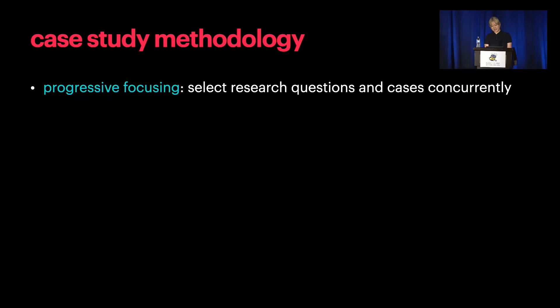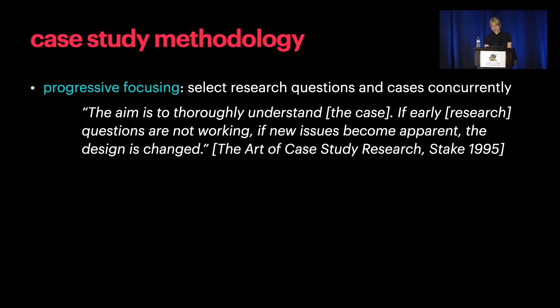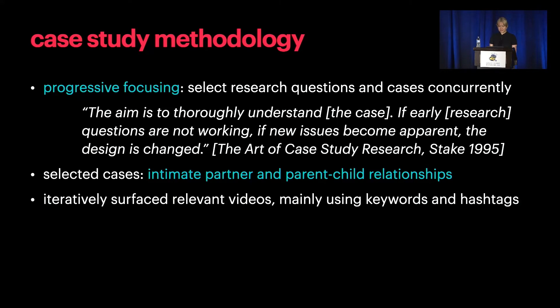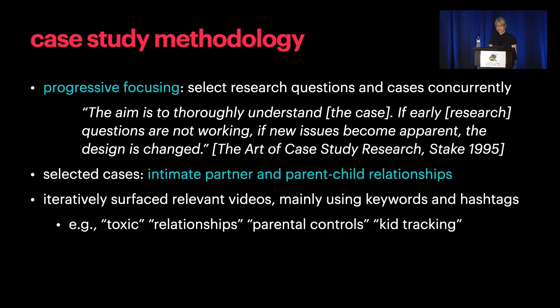We used a case study methodology and selected our research questions and case studies at the same time using an approach called progressive focusing. The aim of progressive focusing is to thoroughly understand the case. If early research questions are not working or if new issues become apparent, the design can change. In this way, we considered other contexts like procterware and smart homes, but ultimately focused on intimate partners and parent-child relationships. To collect data, we continually added new search terms as we explored relevant topics and creators. Some example keywords were: toxic, relationships, parental controls, and kid tracking.